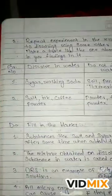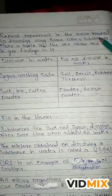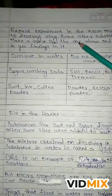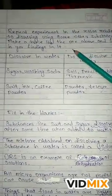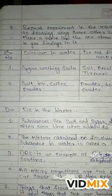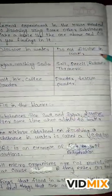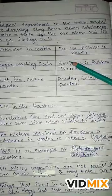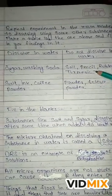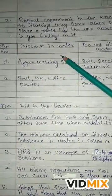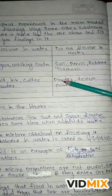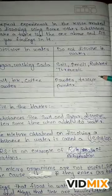No. 2: Repeat the experiment in the lesson related to dissolving using some other substances. Make a table and fill in your findings. Substances that dissolve in water: sugar, washing soda, salt, ink, coffee powder. Substances that do not dissolve in water: soil, pencil, rubber, turmeric, powder, talcum powder.